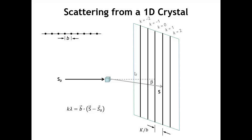If we orient our crystal horizontally rather than vertically, the horizontal crystal comes out toward us in the plane of the projection. The diffraction lines are no longer horizontal — they are now vertical diffraction lines. Rotating the crystal by 90 degrees rotates the diffraction lines by 90 degrees as well. The spacing of those lines is still inversely proportional to the spacing of the atoms, here called B.